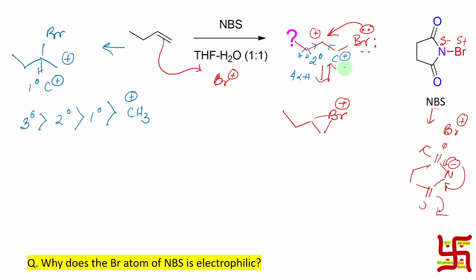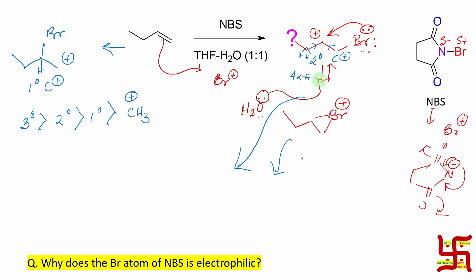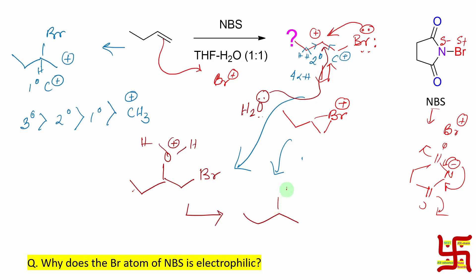So this pathway — through the secondary carbocation/bromonium ion — will be followed. In the next step, remember the ring: the nucleophile will attack from outside the bromonium ring. The water molecule will act as a nucleophile with its lone pair, attack from the back side, and ultimately produce an intermediate where oxygen carries a formal positive charge, with bromine still attached.